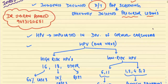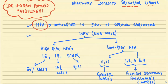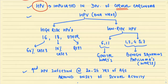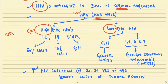The human papillomavirus, abbreviated HPV, is implicated in the development of cervical carcinoma. HPV is a DNA virus. There are two important types: high-risk HPV and low-risk HPV. Among high-risk HPVs, we have types 16, 18, and others — responsible for cervical carcinoma. HPV 16 is most commonly implicated, responsible for about 60% of cases, whereas HPV 18 accounts for around 10% of cases.